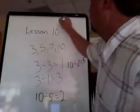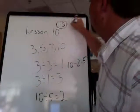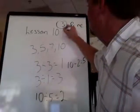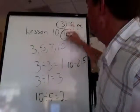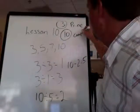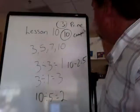So the number 3 is prime, and the number 10, just like our lesson number, is composite.